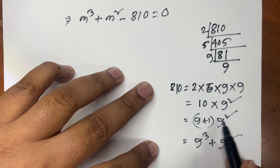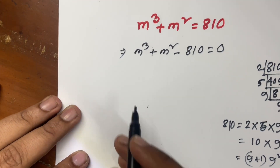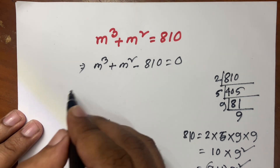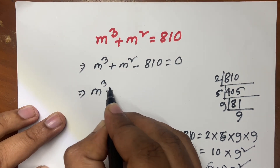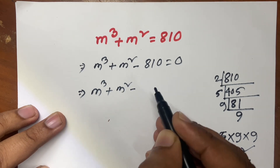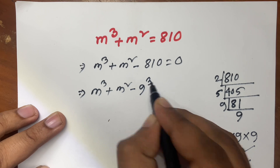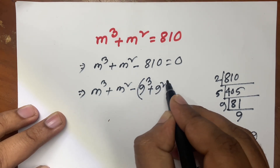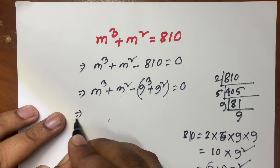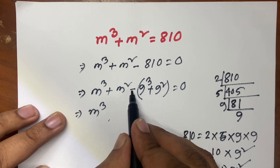If I multiply 9 squared into 9, that equals 9 cubed. And 9 squared times 1 gives 9 squared. So now: m cubed plus m squared minus 9 cubed plus 9 squared equals 0.